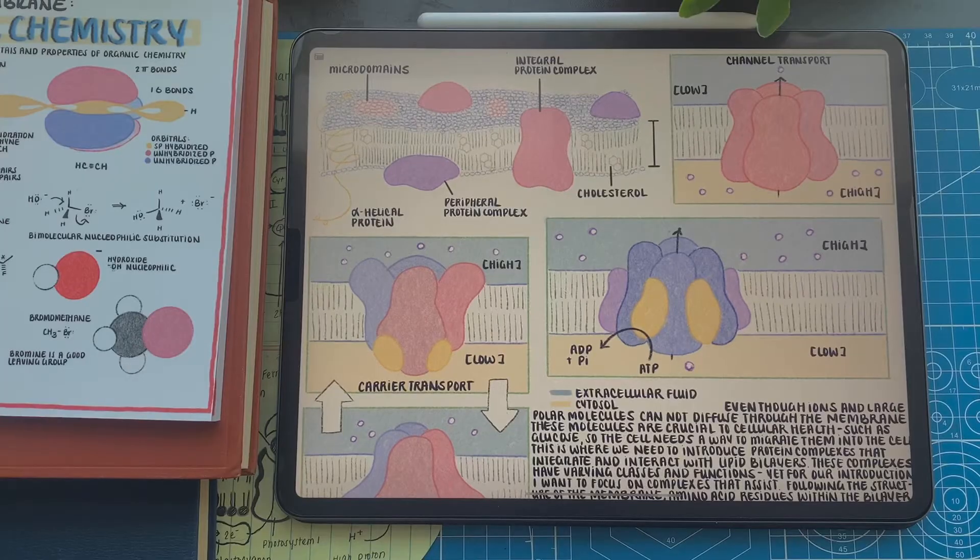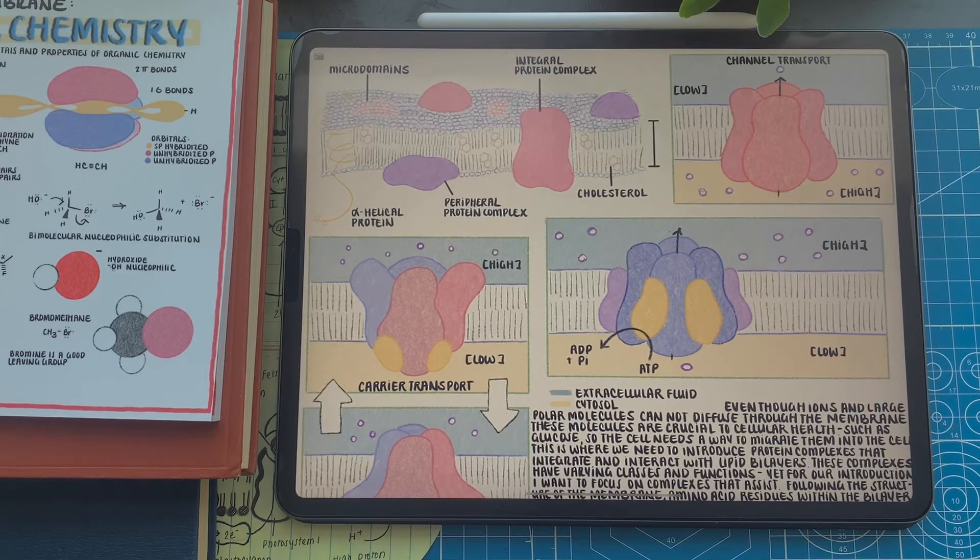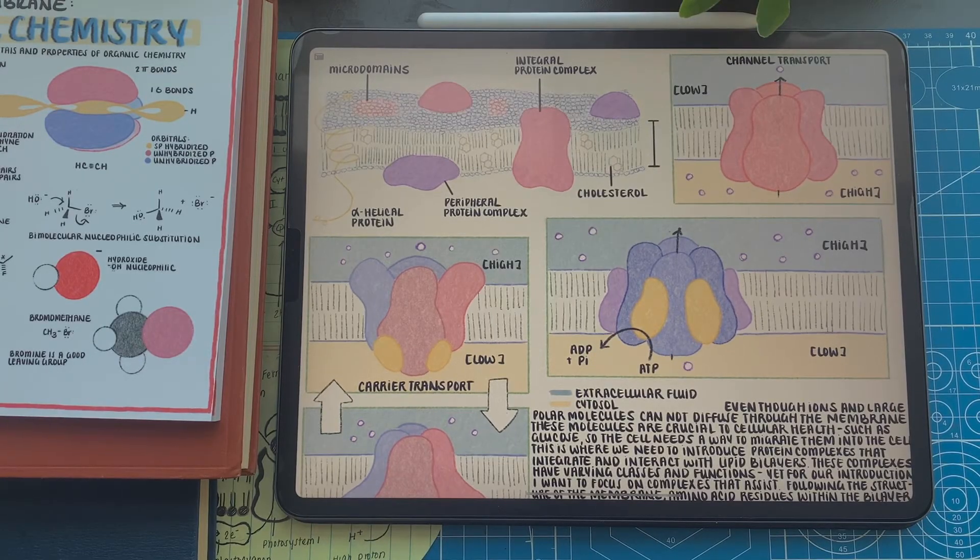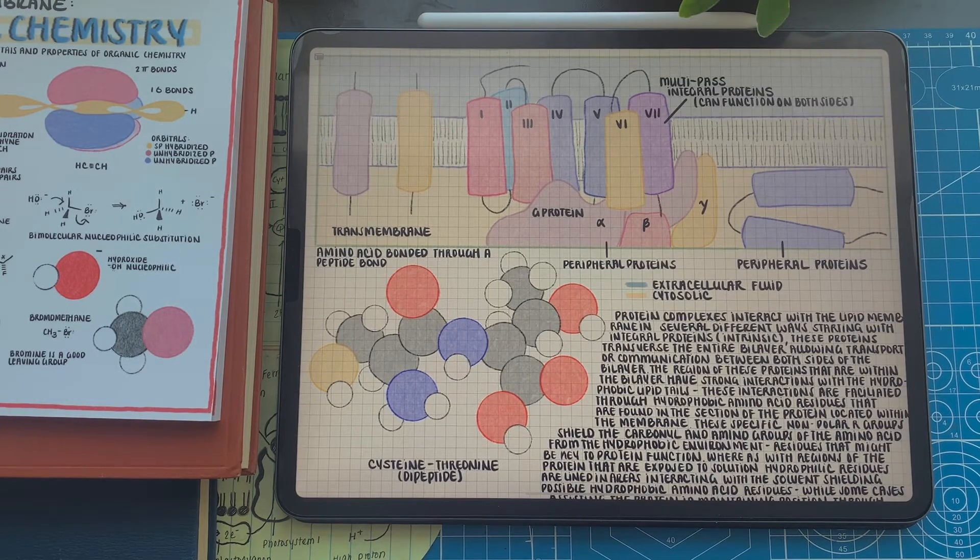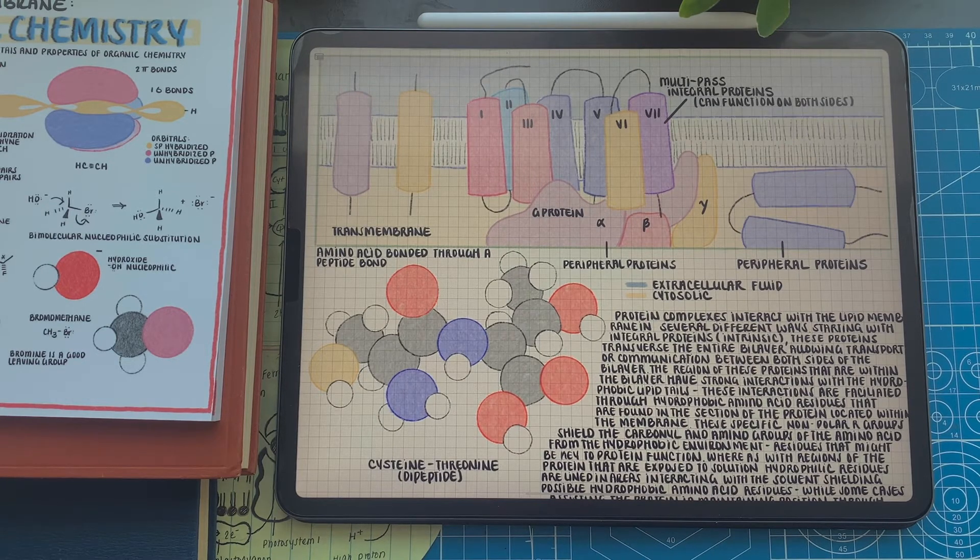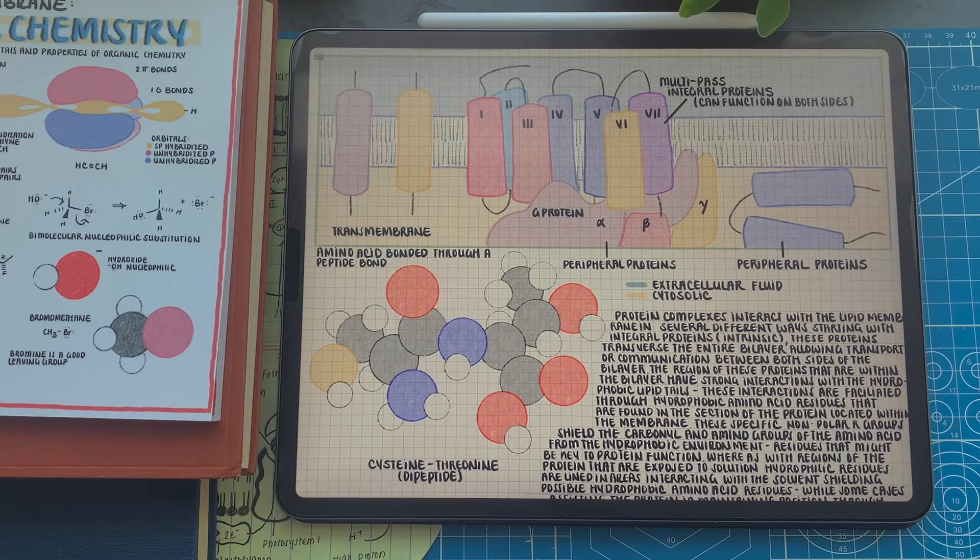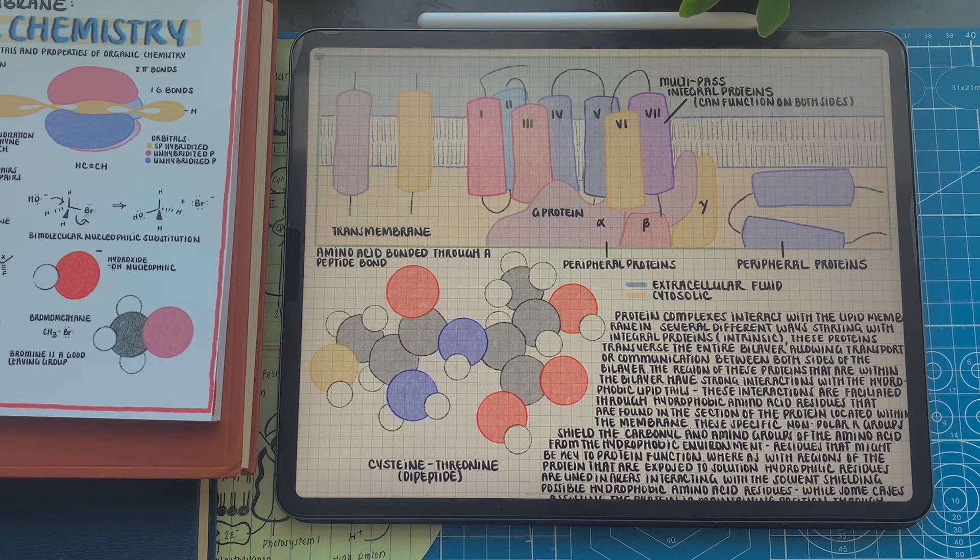Where on the other hand, peripheral membrane proteins do not protrude through the membrane at all, and only have weak associations with the polar head groups of the surface lipids on either side of the membrane. We can find peripheral proteins either associated with the head groups, or even interacting with already existing integral proteins.